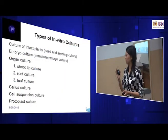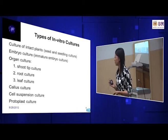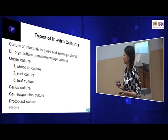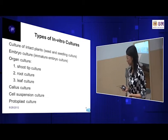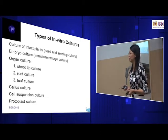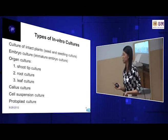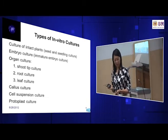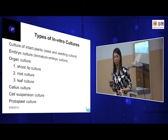Now, types of in vitro cultures: we can have shoot cultures, root cultures, or organ cultures. So basically you can take from the shoot, the roots, or the organs. In the video shown, they primarily selected the shoots — remember they cut off all the roots? Then we also have callus culture — callus are the undifferentiated cells. Then we have cell suspension, and then protoplasts.